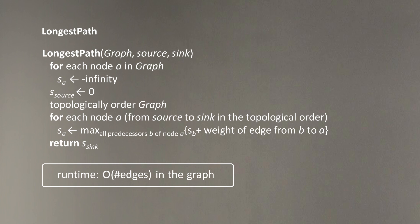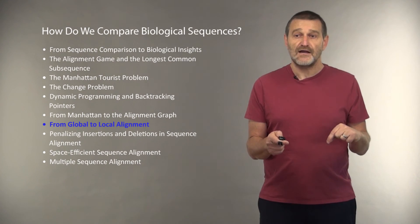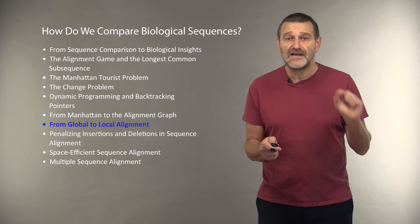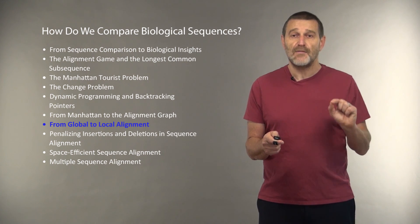What is the runtime of this algorithm that we will use heavily in the remainder of this lecture? Well, when we run dynamic programming, we look at every edge in the graph just once to update the node that this edge goes into. And therefore, the runtime of the dynamic programming algorithm for finding longest paths is proportional to the number of edges in the graph. And we are now ready to look at different varieties of sequence alignment problems in biology.